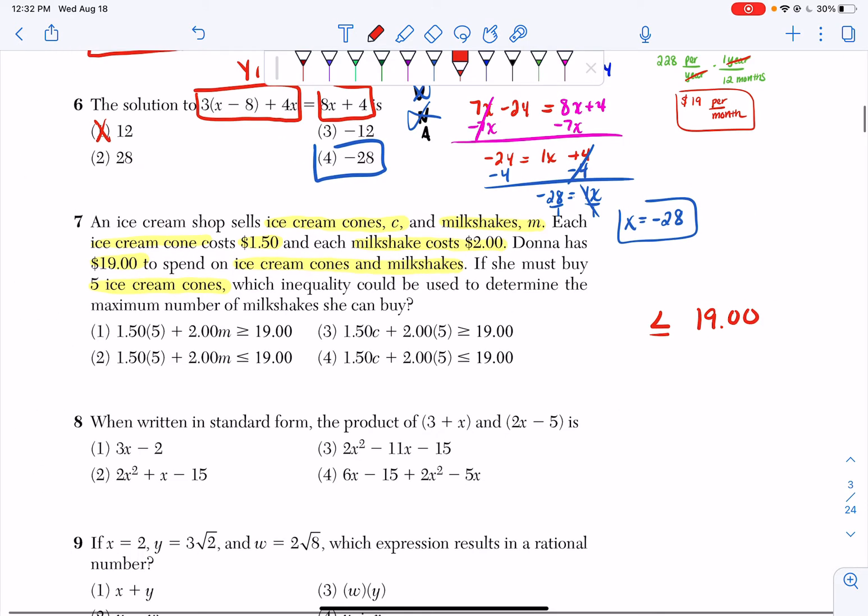So if I look at all these answer choices, choice one and choice three have the greater than or equal sign. So I can't have choice one or three.